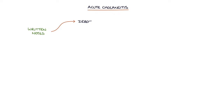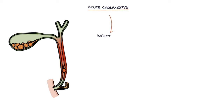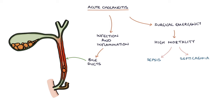Hi, this is Tom from ZeroToFinals.com. In this video, I'm going to be going through acute cholangitis. You can find written notes on this topic at ZeroToFinals.com/acute-cholangitis or in the general surgery section of the ZeroToFinals surgery book. Acute cholangitis is infection and inflammation in the bile ducts. It's a surgical emergency and it has a high mortality rate due to sepsis and septicemia.